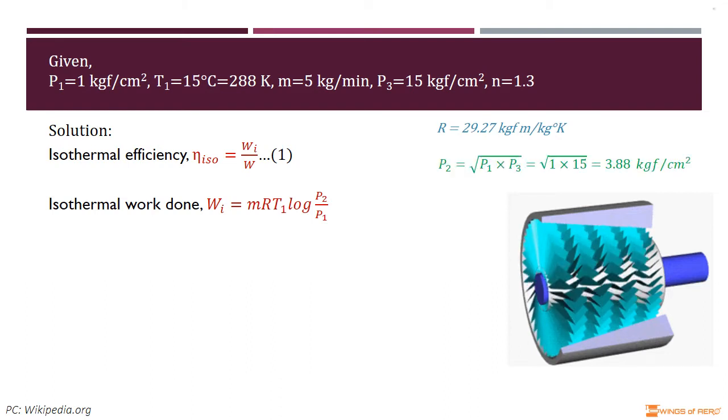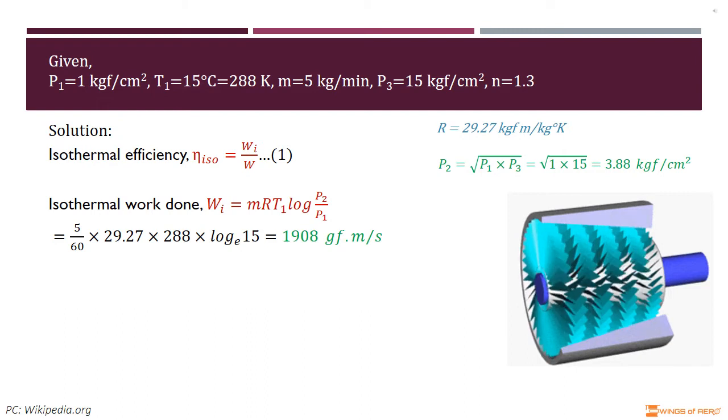For multi-stage compression, we know P₂ = √(P₁ × P₃). The pressure ratio for each stage is the same, which also gives equal work in each stage. From this, we can write P₂ = 3.88 kgf/cm². Then the isothermal work done W_I = 1908 gf·m/s.